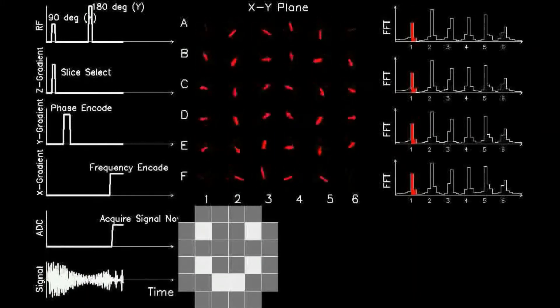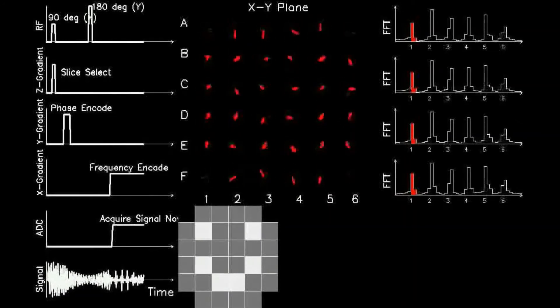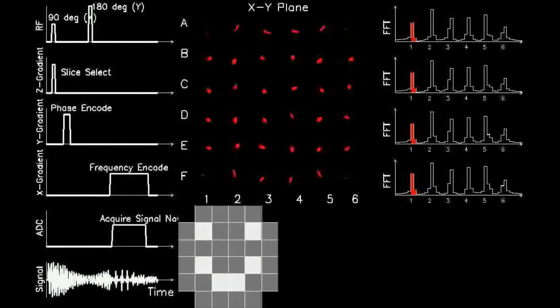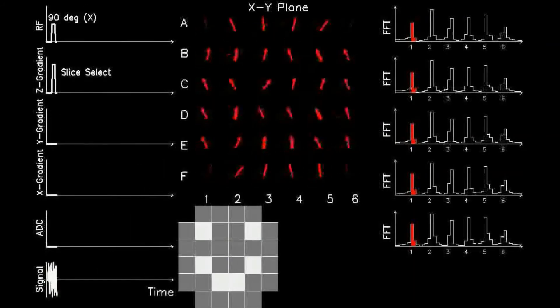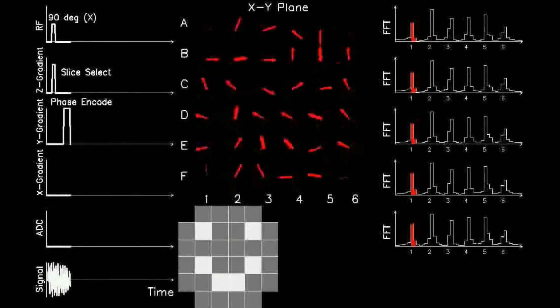In reality, the order of the mathematical steps taken in the scanner's computer is different than the one presented here, involving a two-dimensional Fourier transform after the formation of a two-dimensional k-space.